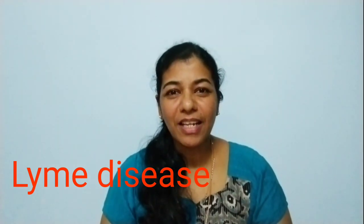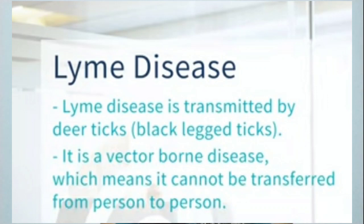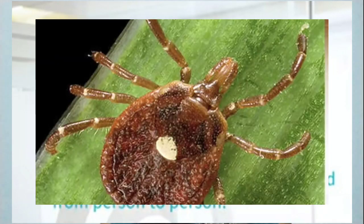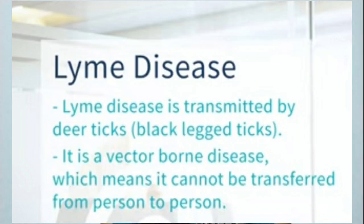What is Lyme disease? Lyme disease is caused by a tick bite. It's transmitted by deer tick or black-legged ticks. It's a vector-borne disease, meaning it cannot be transmitted from person to person. So it's called a vector-borne disease.